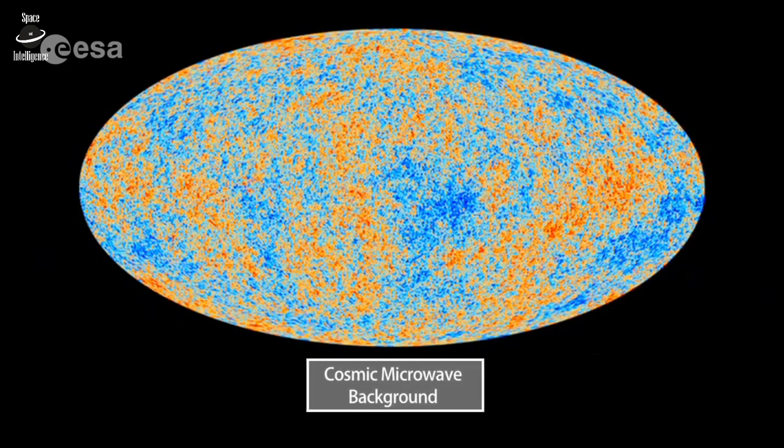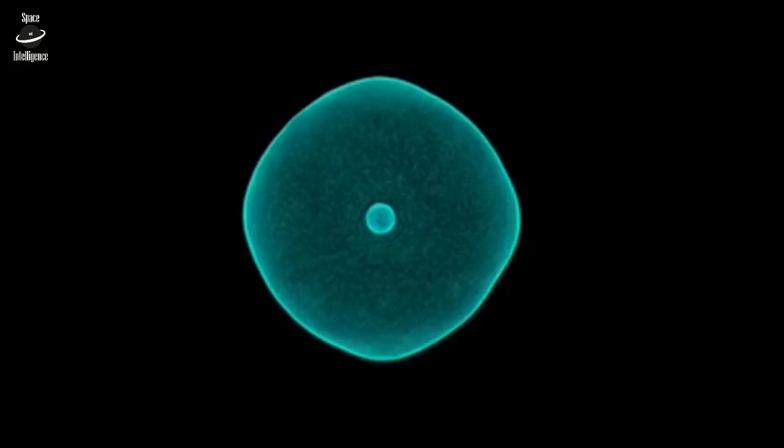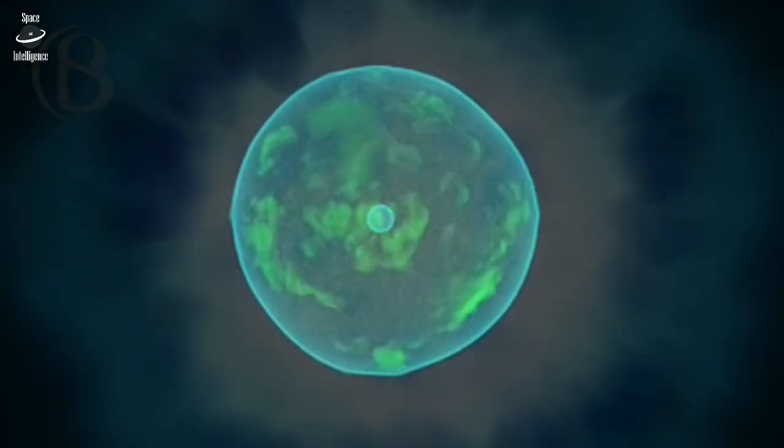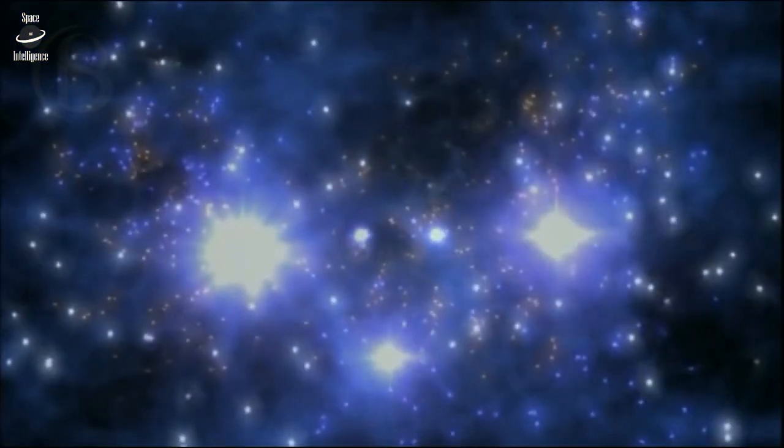Inflation solves that by starting with the universe being much smaller than it would have been in conventional cosmology. The uniformity can be established before inflation sets in. Then inflation takes a tiny speck, which has already been made uniform, and stretches it to become large enough to include everything that we observe, thereby giving a very natural explanation for the uniformity that we do observe in the universe.